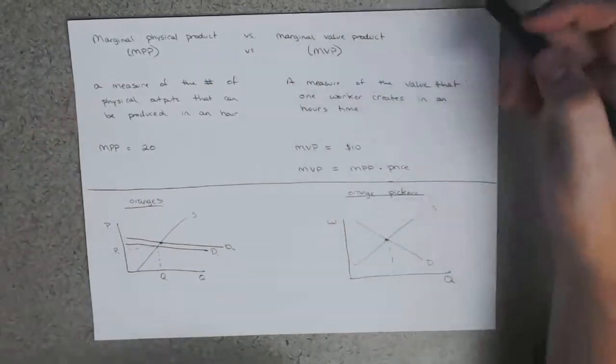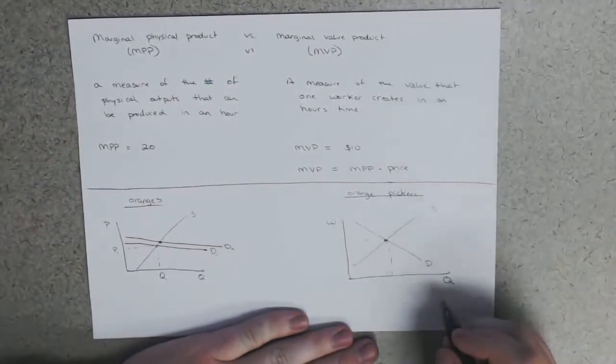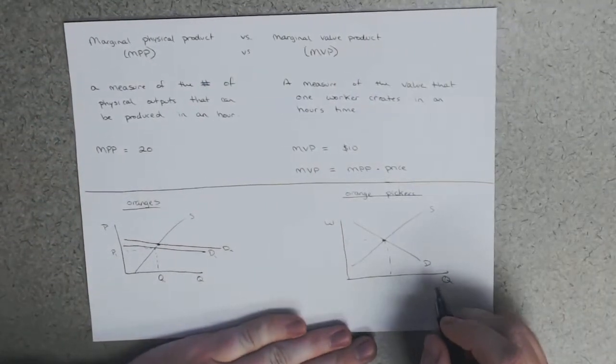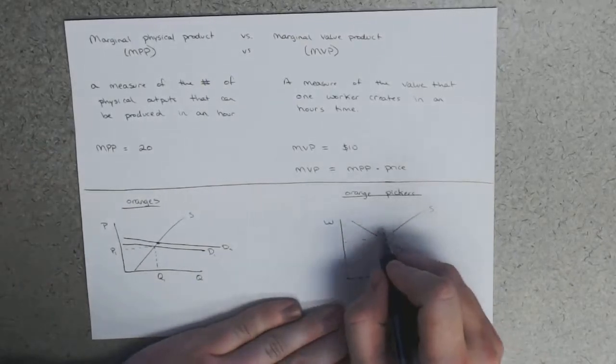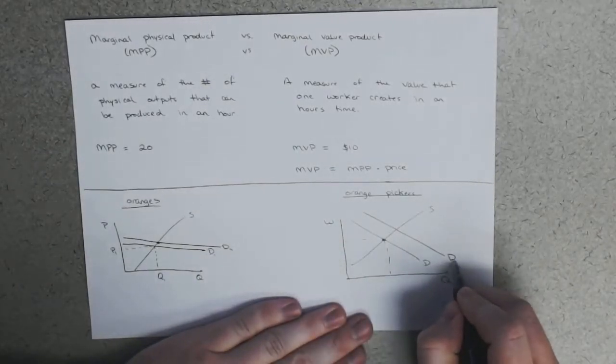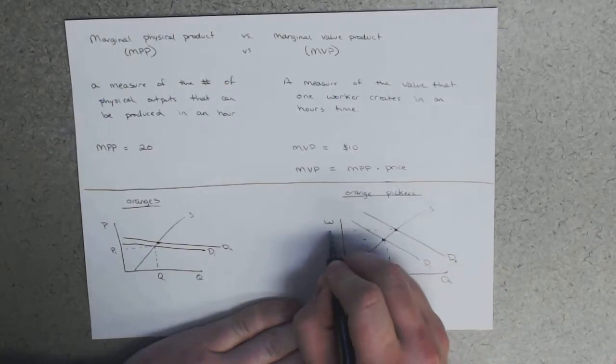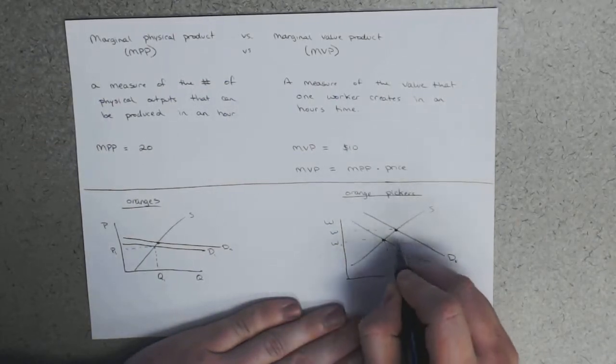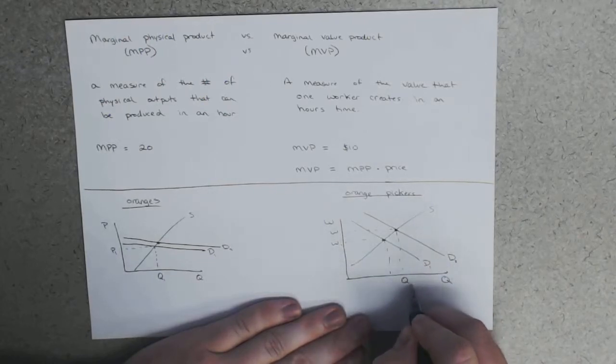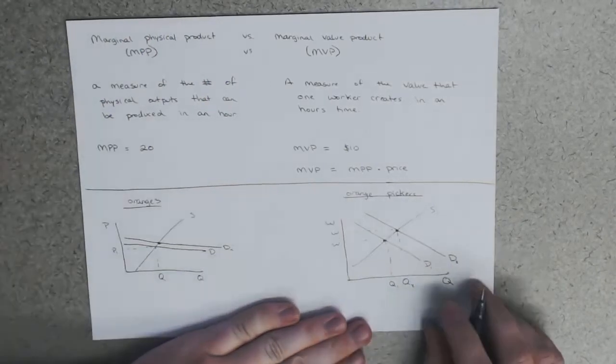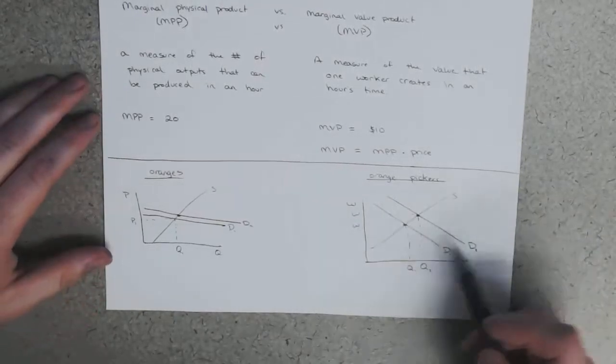It hasn't affected their MPP at all, but it has increased their MVP because the price is now higher. At higher marginal value product, orange farms want to hire more orange pickers, and so as a result, demand for orange pickers increases.